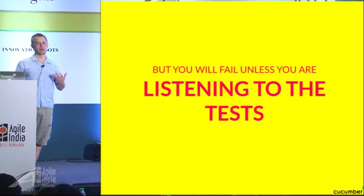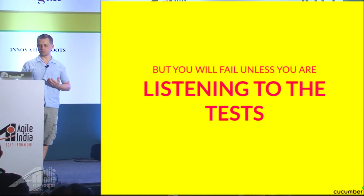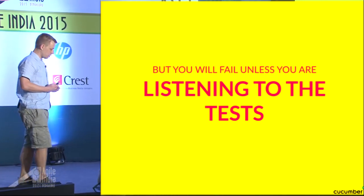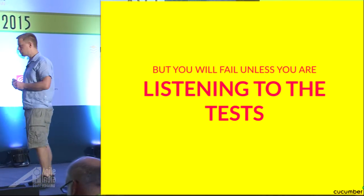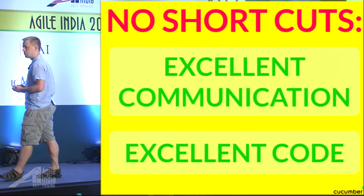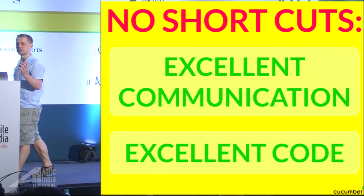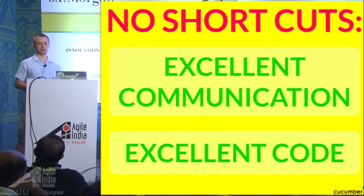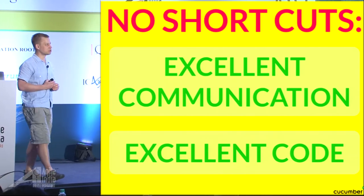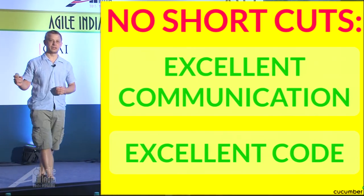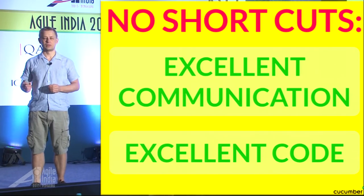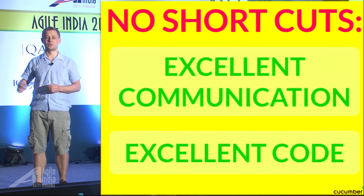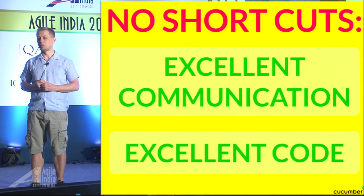To sum up: if you want to succeed with agile, there are no shortcuts. You have to have excellent communication in your team — you have to talk to one another. Try those discovery workshops for stories. And you have to have excellent code. If you don't have these, you can forget about agile.